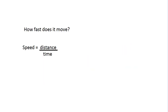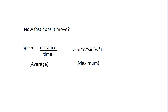So there are two equations. The first one is for average velocity: speed equals distance over time — a standard physics equation. The next one is for the maximum (or instantaneous) velocity, which is: velocity equals omega times amplitude times the sine of omega times time. It looks complex but don't worry — I'll show you how you can get rid of half the equation because we're using the maximum and not some random value.